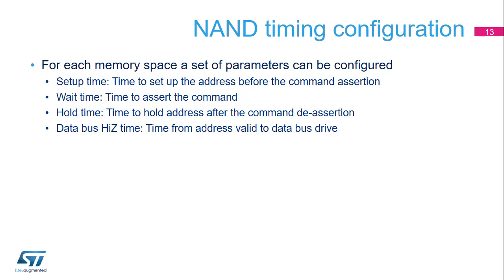Each common and attribute memory space can be configured with different timings for the NAND Flash command, address write, and data read/write accesses. The attribute memory space is used for the last address write access if the timing must differ from previous accesses in case of ready/busy management; otherwise, only common space is needed. Four parameters define the number of HCLK cycles for the different phases of any NAND Flash access: setup time, wait time, hold time, and data burst high impedance time.